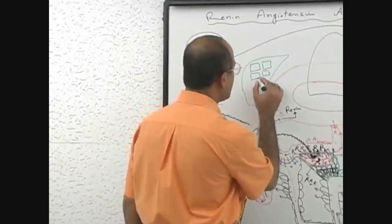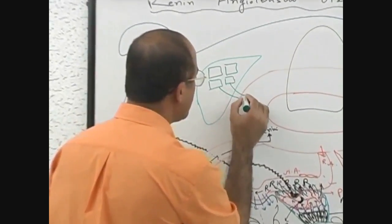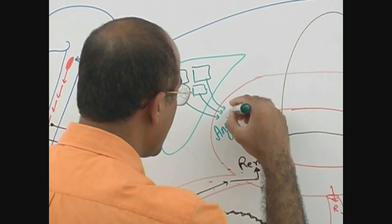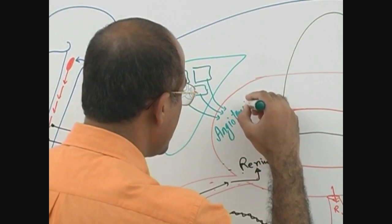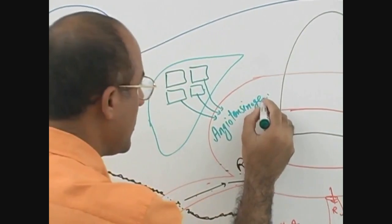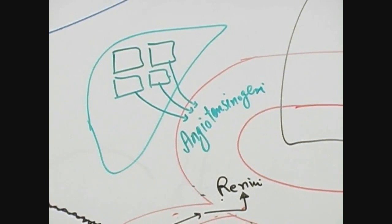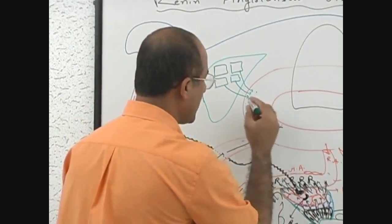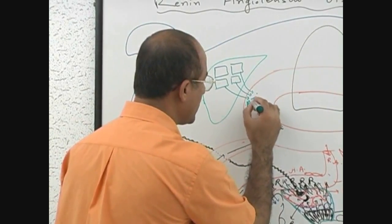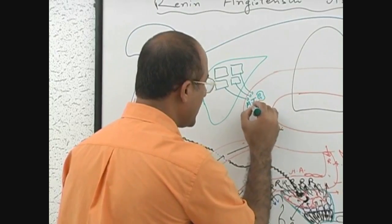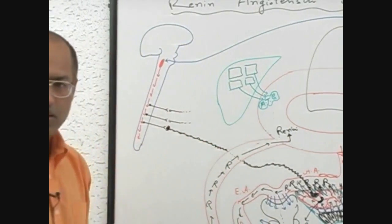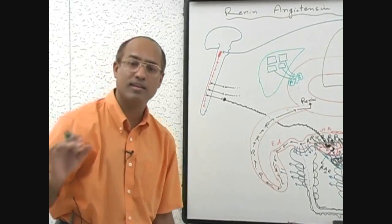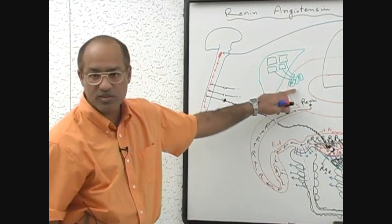Liver cells produce one very special type of protein normally and this protein is called angiotensinogen. It's coming from liver and it is not coming only during crisis - it is produced by the liver all the time. Right now all of you have in your blood angiotensinogen.